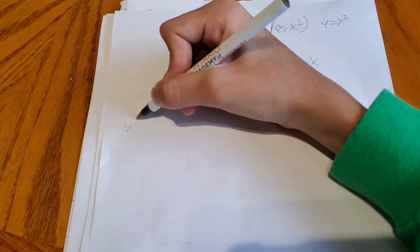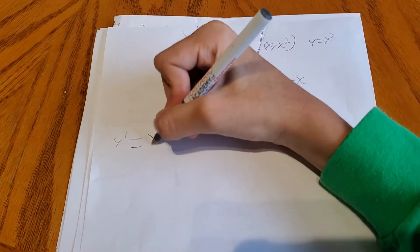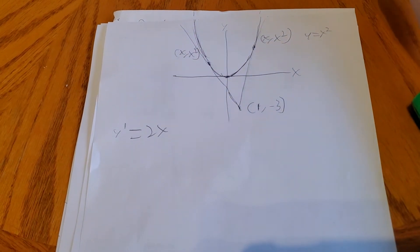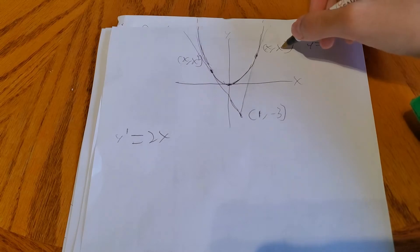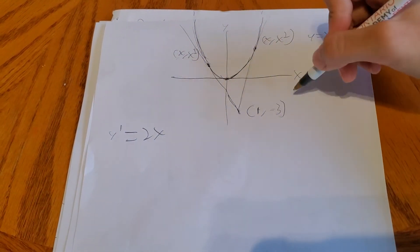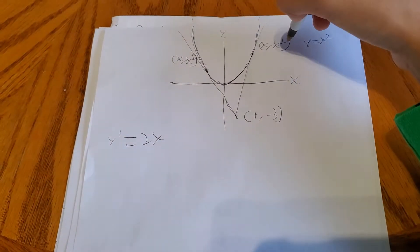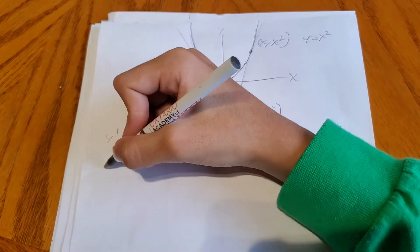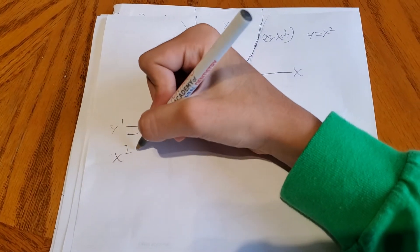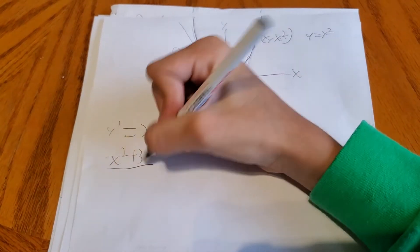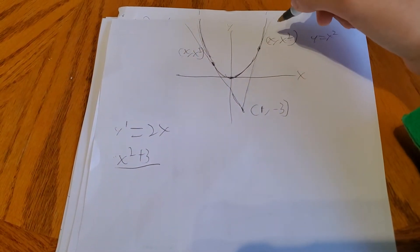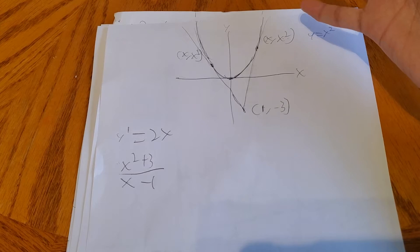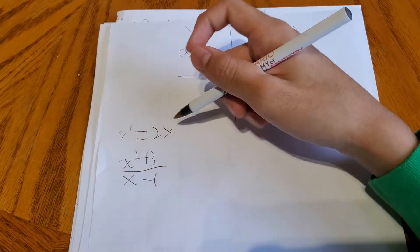Another way of finding the slope is doing delta y over delta x. We're given the point on the parabola and the point (1, -3), so we do the difference of y divided by the difference of x. The difference of y is x squared minus negative 3, which is x squared plus 3. So (x squared plus 3) divided by delta x, which is (x minus 1). This is another way of finding slope, and it equals the derivative 2x.